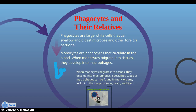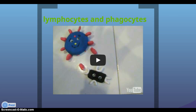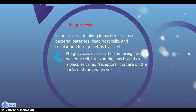A specialized type of macrophage can be found in many organs, including the lungs, kidneys, brain, and liver. Phagocytosis is the process of taking in particles such as bacteria, parasites, dead host cells, and cellular and foreign debris by the cell itself.